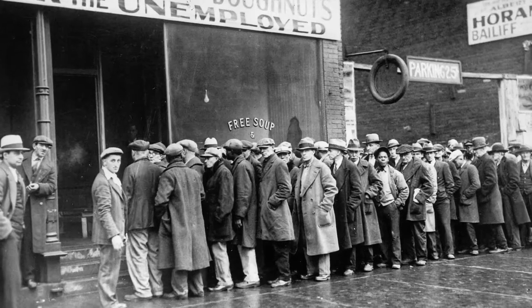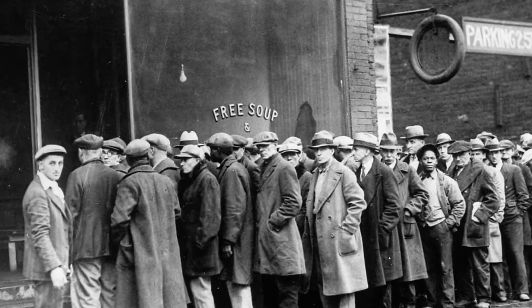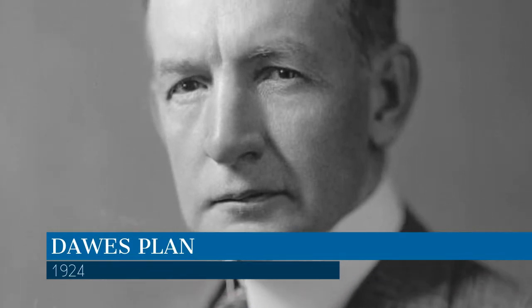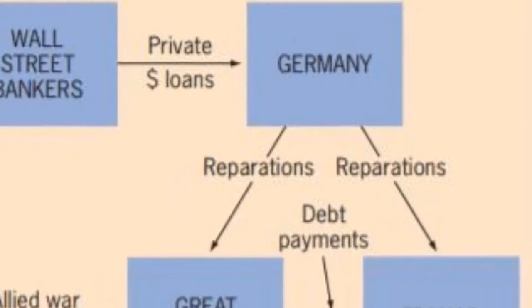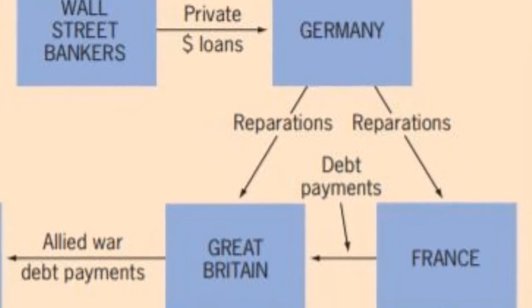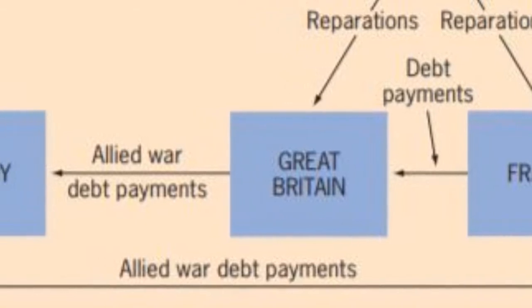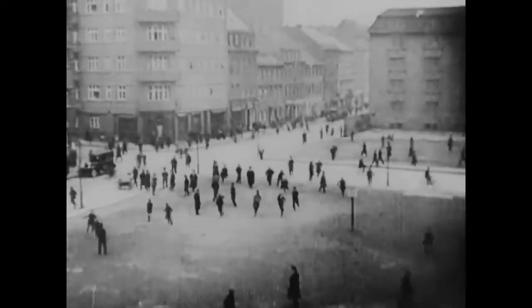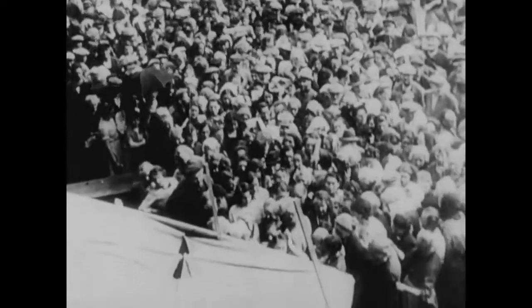The outbreak of the Great Depression in 1929 significantly destabilized the international community. Before the stock market crashed, the United States had set up a system of paying back war debts accrued during World War I called the Dawes Plan. Under the Dawes Plan, the United States would invest money in Germany, which in turn would help them pay back war reparations to Great Britain and France, who could then use those reparations to pay down debt borrowed from the United States during World War I. However, when the stock market crashed, American credit to Germany dried up, and the cycle of financial payments ground to a halt.